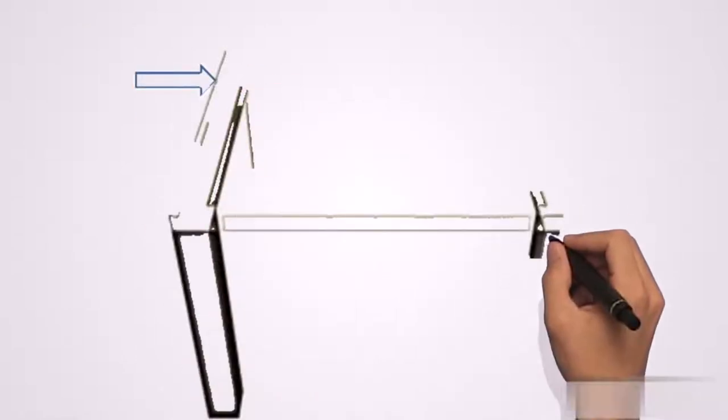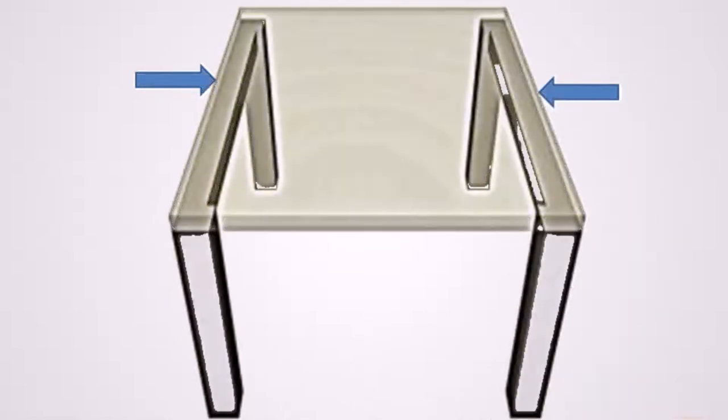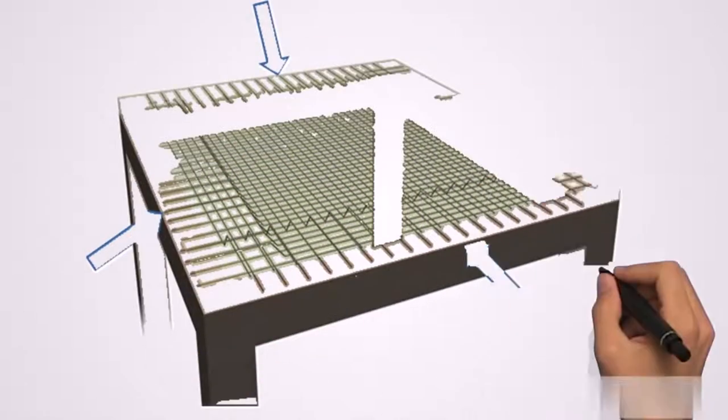One-way slabs are supported only on two parallel and opposite sides, while two-way slabs are typically supported on four sides.